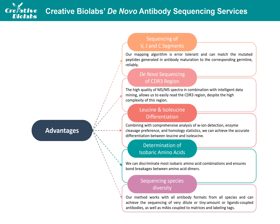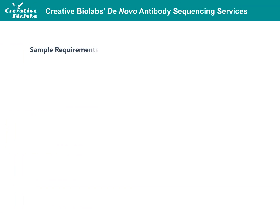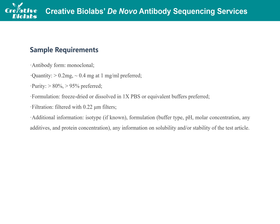Mixtures of two clones produced by older hybridomas can also be sequenced. To achieve the highest coverage and accuracy, we recommend the following to prepare sequencing samples. First, please ensure your antibody is in monoclonal form. The quantity and purity need to be greater than 0.2 mg and greater than 80% respectively. For the formulation, freeze-dried or dissolved in PBS or equivalent buffers are preferred. Filtration is required — please filter your samples with 0.22 micron filters. Please also provide additional information on your antibody samples, such as antibody isotype, details of unusual formulation, and any information on solubility and stability of the test article. The turnaround time is usually 15 to 28 business days after receiving the sample.